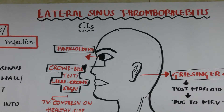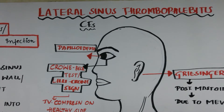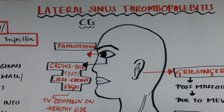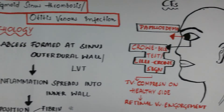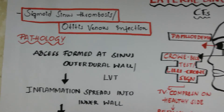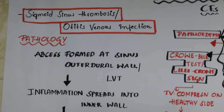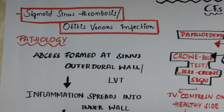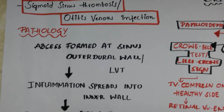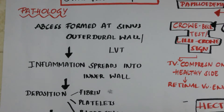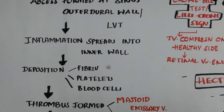Now I am going to discuss lateral sinus thrombophlebitis. It is the inflammation of the inner wall of the lateral venous sinus. It is also called sigmoid sinus thrombosis or otitis venous infection. It is a complication of CSOM, cholesteatoma, and mastoiditis.